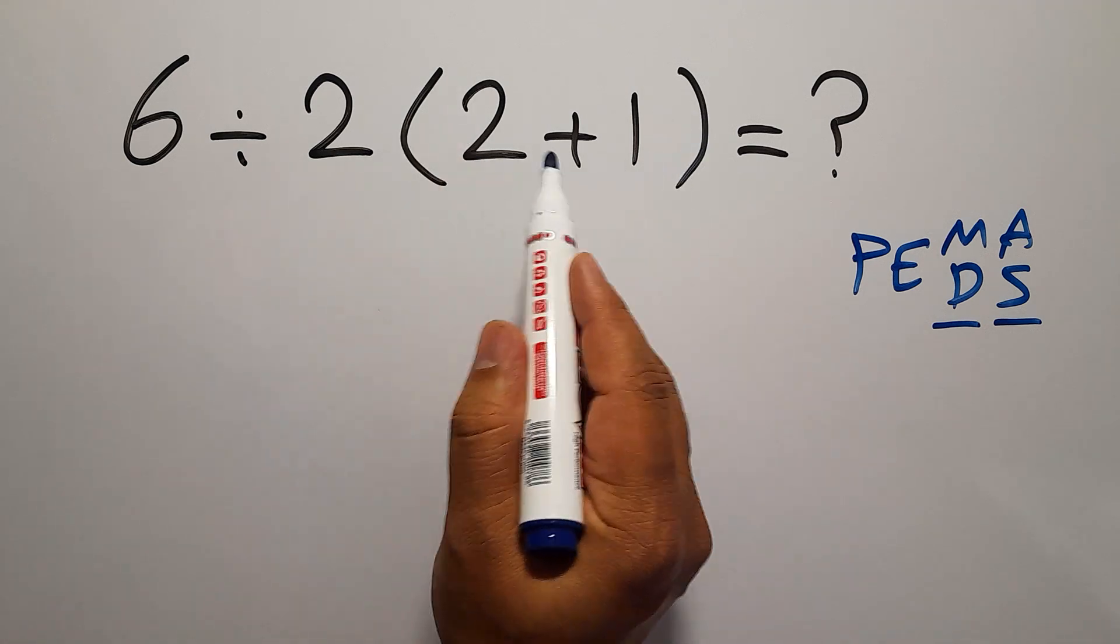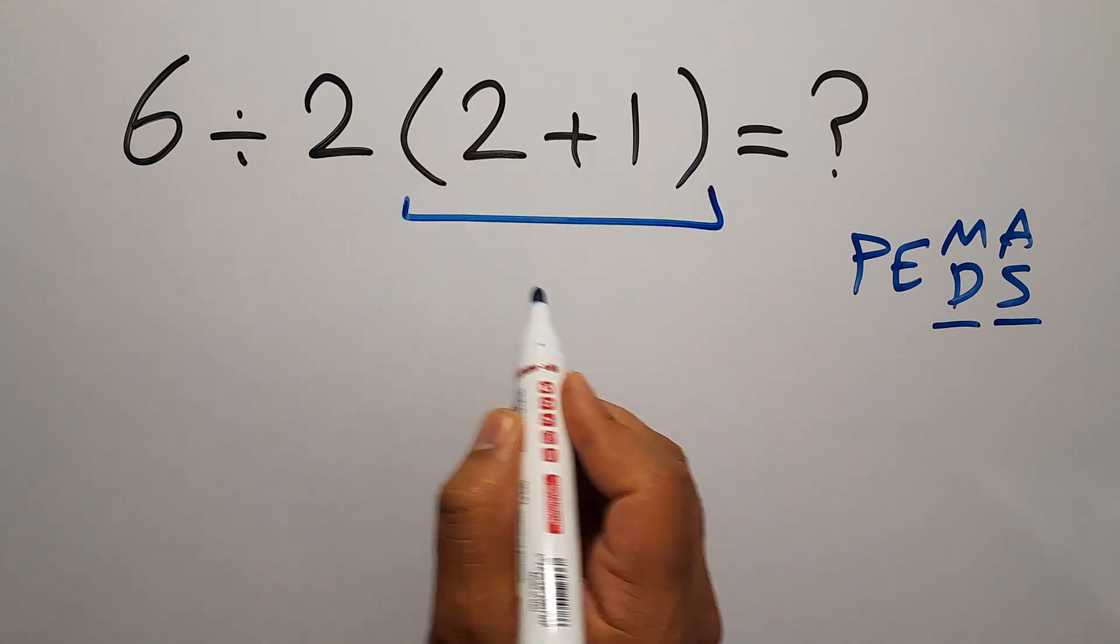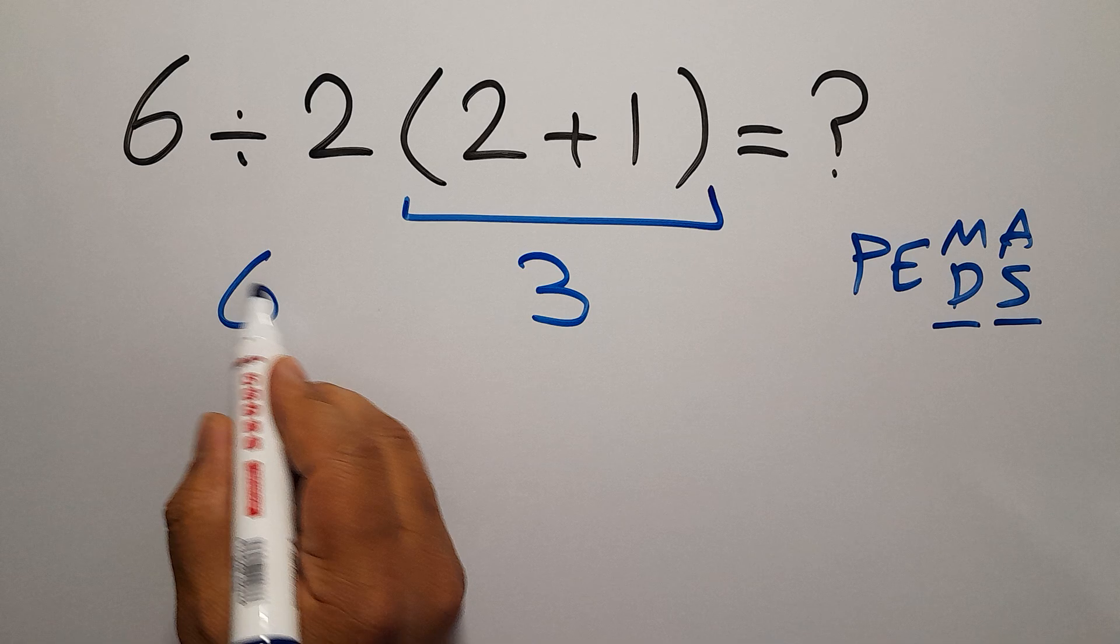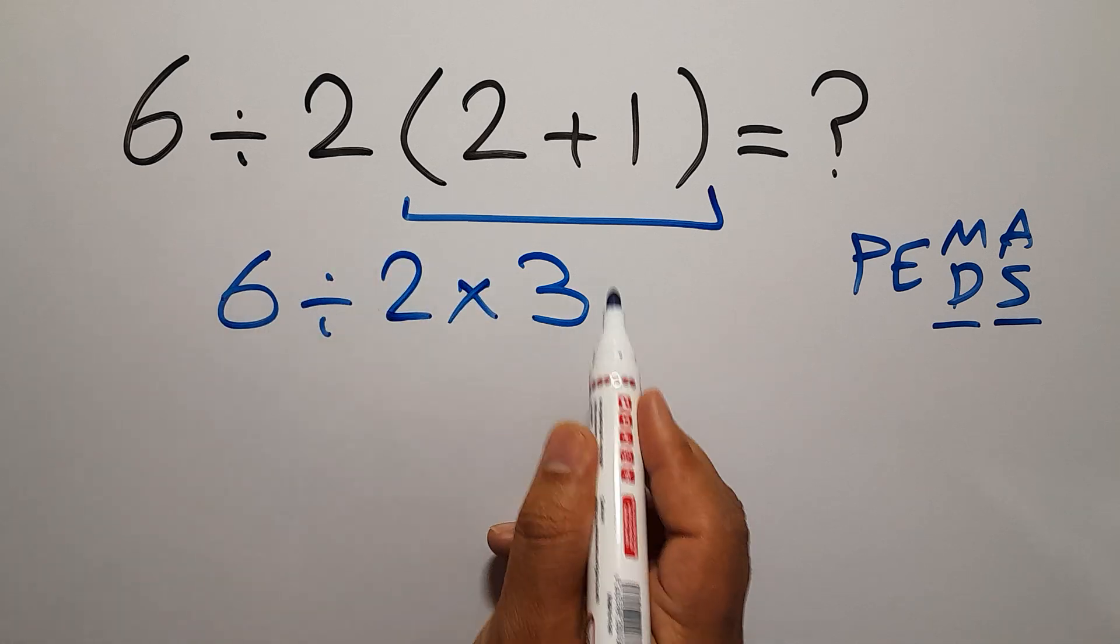Inside this parentheses, we have 2 plus 1, which equals 3. So, we have 6 divided by 2, then times 3.